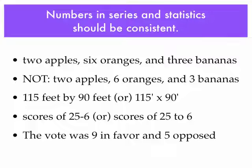Numbers should be in series and statistics should be consistent. For example: two apples, six oranges, and three bananas — not '2 apples, six oranges, and 3 bananas.' You get the idea.